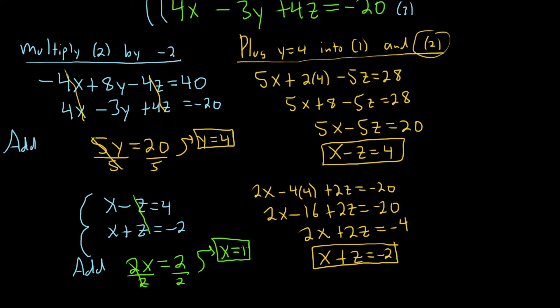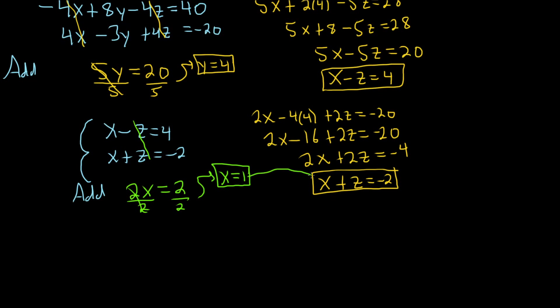Now that we have x, we can plug it in to find z. Let's just plug it in here because it's close. So 1 plus z equals negative 2. Subtract 1. So we get z equals negative 3.